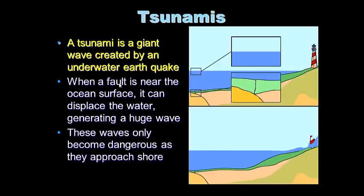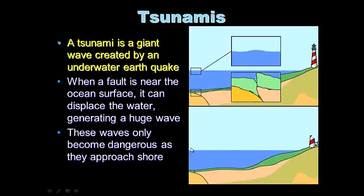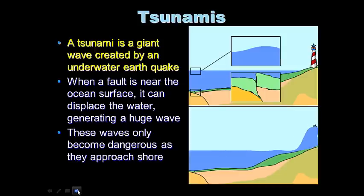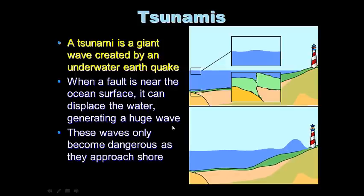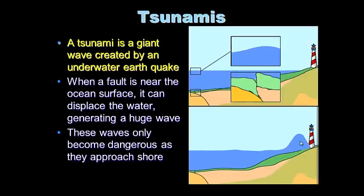The last topic today is tsunamis. A tsunami happened not long ago in Japan, killing about 20,000 people. Off the coast of Japan, a fault broke, displacing water and generating a huge wave. This bulge of water is pushed upward — you don't notice it at sea, but as it approaches shore it becomes dangerous, standing up very tall. It's a flood or surge of water that can travel miles inland and destroy everything in its path.